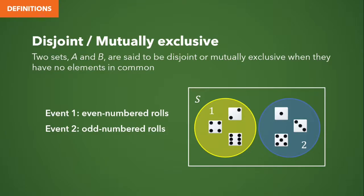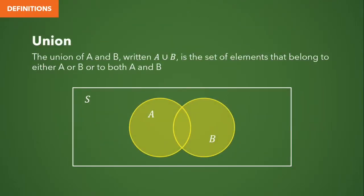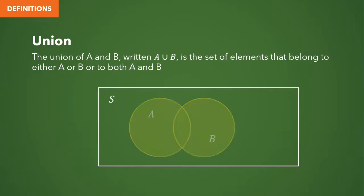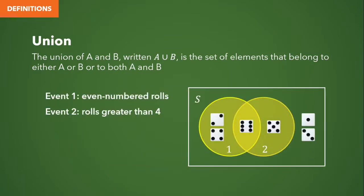Now we have the concept of the union. The union of A and B, written with a U-shaped symbol, is the set of elements that belong to either A or B or to both A and B. In Venn diagrams, we represent this relation by shading the events the same color or pattern. The union of event 1 (even numbered rolls) and event 2 (rolls greater than 4) is the set containing 2, 4, 5, and 6. Even though 6 is common to both, we don't need to repeat it when writing our overall set.